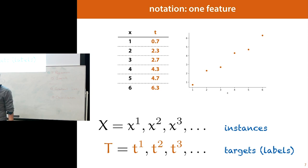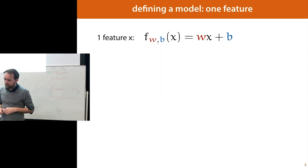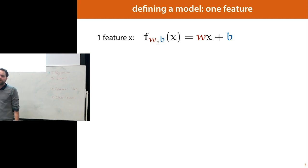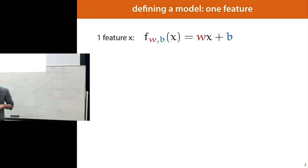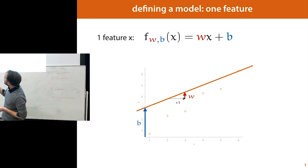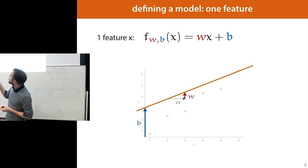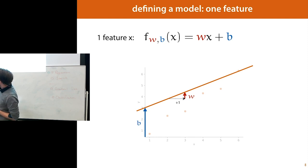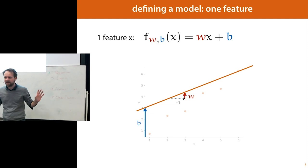On this simple dataset with just one feature, we want to define a linear model. If you remember your high school math, this is what a linear function looks like: you take the input x, multiply it by some number, and add some other number. These two numbers, W and B, stand for weight and bias — not very intuitive names, but that's what we call them. These two numbers are enough to define any line. W, also called the slope, tells us how fast the line increases if we take one step to the right. B tells us how high up the line is at the origin — that's basic high school math.